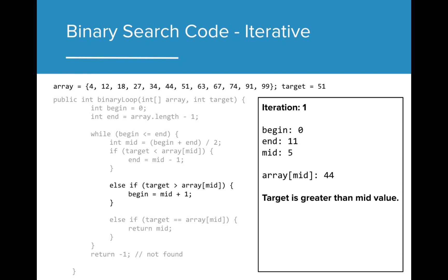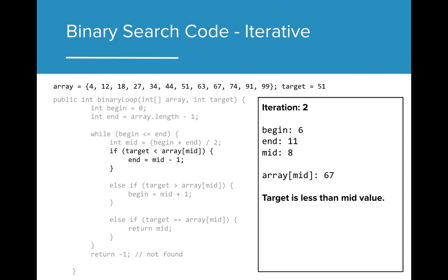On our first pass, we see that our target is greater than our midpoint value. We then update the beginning index to be the next index after that midpoint. We continue this process. Since the beginning is now 6 and our end has not changed, our midpoint shifts to 8. Remember, the average of 6 and 11 is actually 8.5, but since these values are integers, it gets truncated to 8. We now see that our target value is less than the value of our new midpoint, so we adjust our endpoint and eliminate the top half of this iteration.